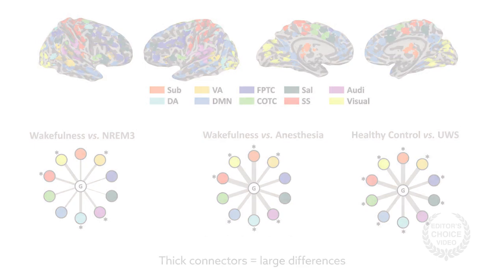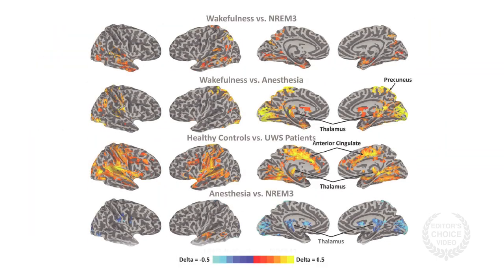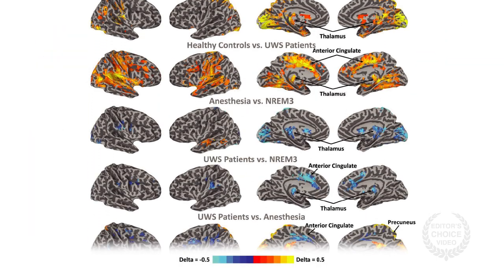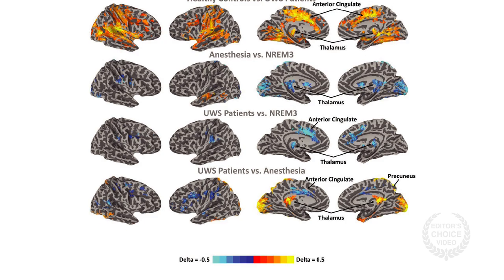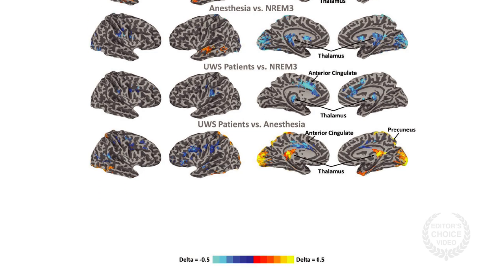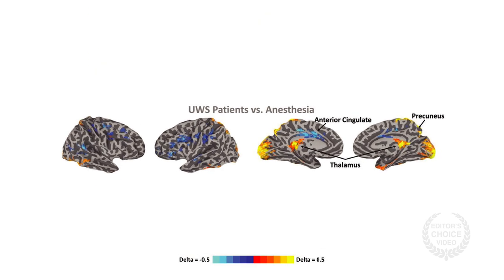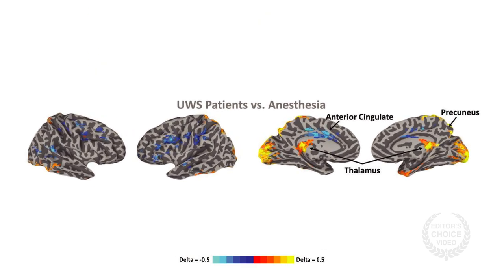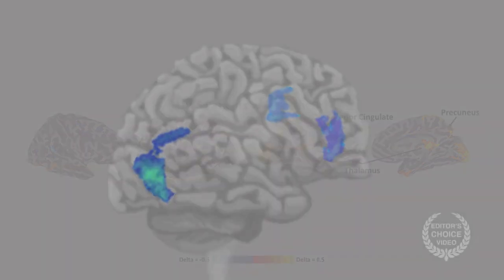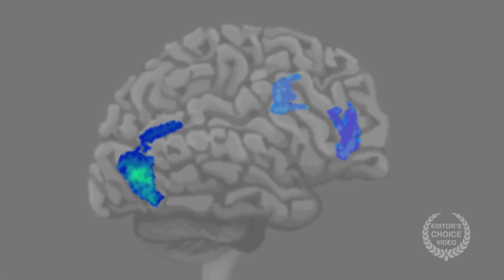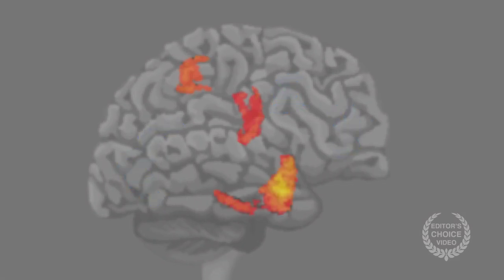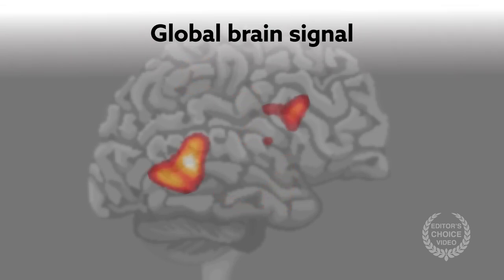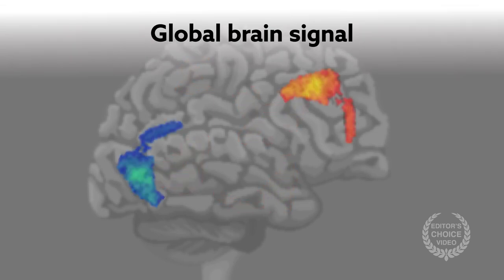Topography comparisons also revealed distinct differences between states that otherwise might look similar, such as general anesthesia versus a vegetative state. While more research is needed to validate the measure, the results suggest that once there is a more practical way to capture it, the global brain signal could be a good indicator of consciousness in patients.